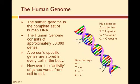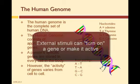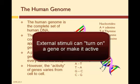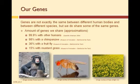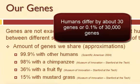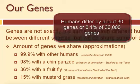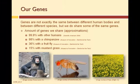Some of our genes are not active, while others are active, and that activity can vary from cell to cell. Also, there are a variety of external stimuli that can actually turn a gene on or make it active. The activity of one's genes can determine whether or not we develop certain traits, or whether or not we are susceptible to certain diseases. It is worth noting that individual human beings differ by about 0.1% genetically. With about 30,000 genes in the human genome, this means that between human beings, we only have about 30 genes that are different. These 30 genes are why we as humans look different and why we have different traits.